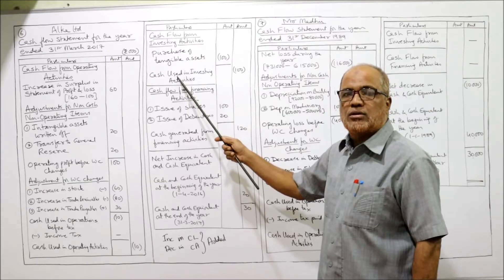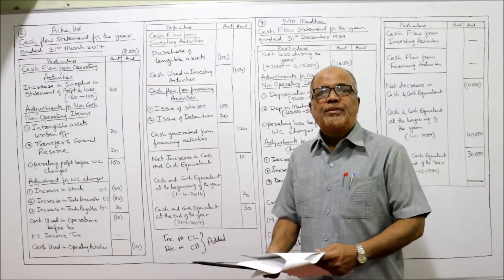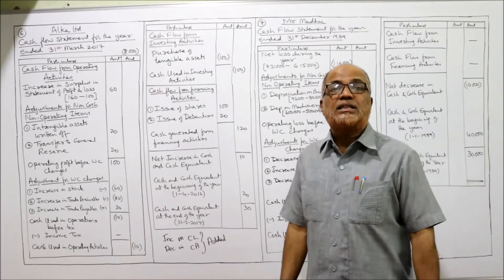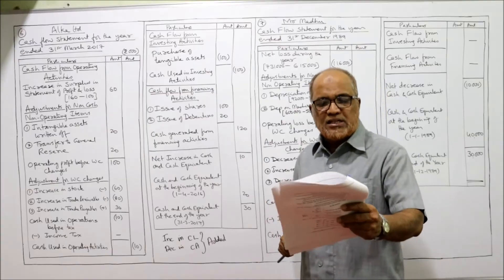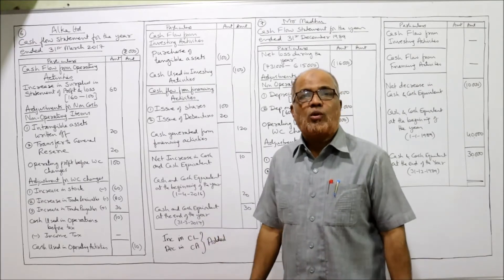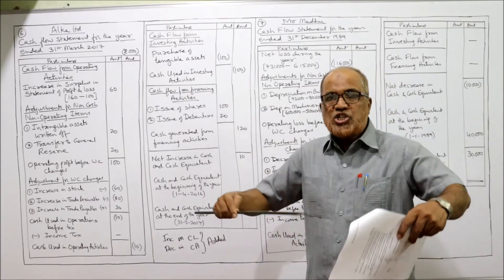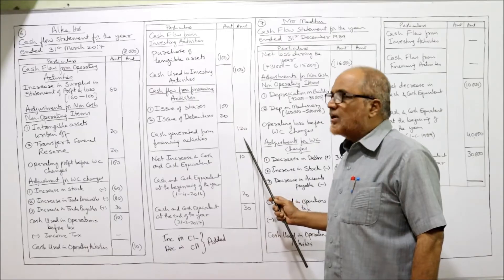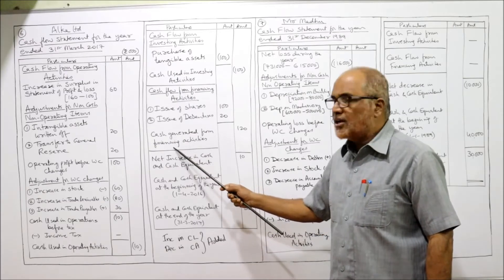Cash flow from financing activity — we consider share capital, debentures, etc. Share capital: last year 200, current year 300 — shares were issued: 100. Debentures: last year 100, current year 120 — increased, so issue of debentures: 20. Total financing inflow: 120. When shares and debentures are issued there is cash inflow, so both are positive — cash generated from financing activity.